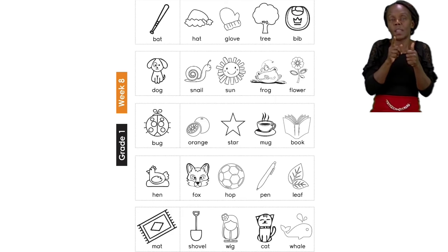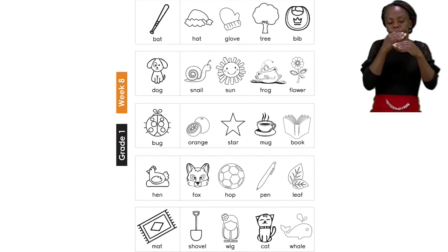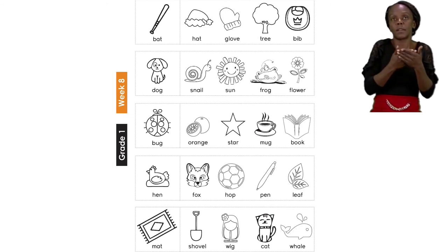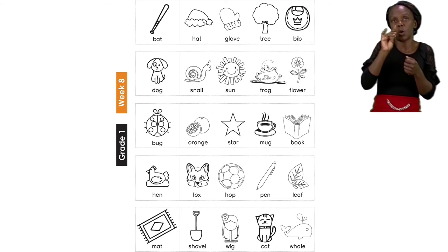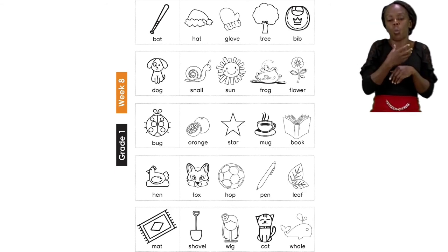Now the next picture we can see is a dog. Now we need to find the rhyming word. Is it the word snail? Or sun? Or frog? Or flower?